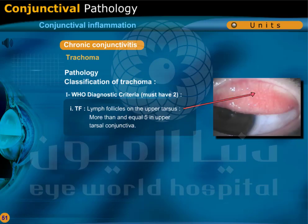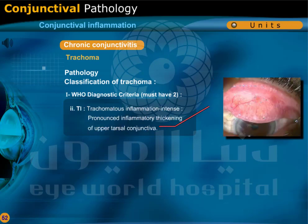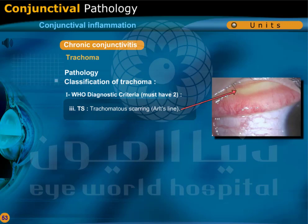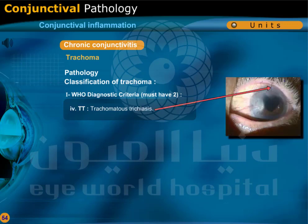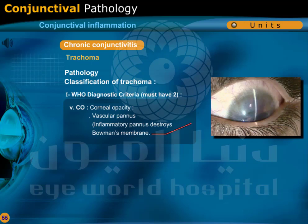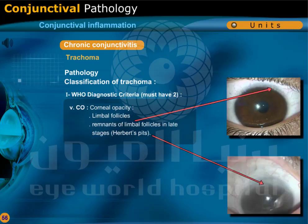Classification of trachoma — WHO diagnostic criteria — requires at least 2 of the following: TF: lymphoid follicles on the upper tarsus, five or more in the upper tarsal conjunctiva; TI: trachomatous inflammatory intense — pronounced inflammatory thickening of the upper tarsal conjunctiva; TS: trachomatous scarring — Arlt's line; TT: trachomatous trichiasis; CO: corneal opacities.